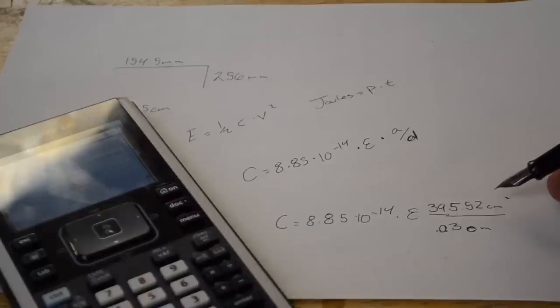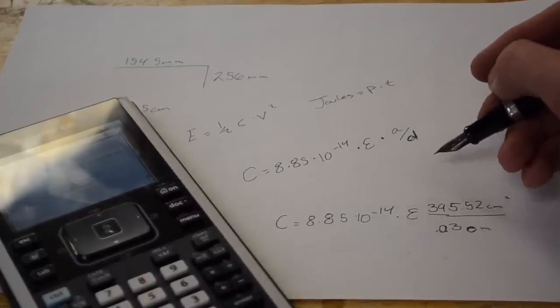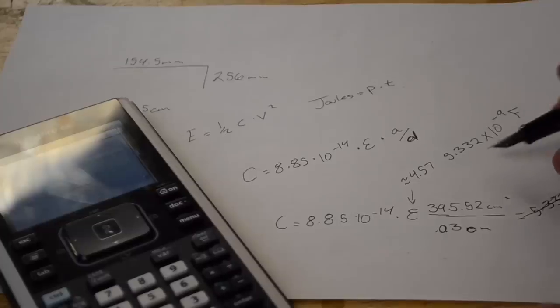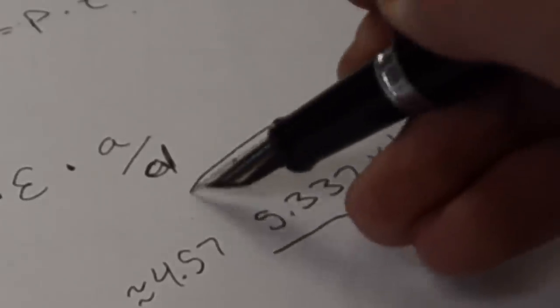So I ran through our calculations from before, and knowing that the plastic I'm going to be using is a stuff called cellulose acetate, the dielectric constant should be around 4.57. So plugging all this in gives us a value of about 5.332 times 10 to the negative 9th farads.